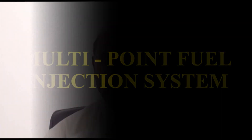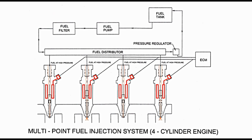In due time, these were replaced by multipoint fuel injection systems. In this system, a fuel injector is provided for each intake port. The fuel pump starts working as soon as the engine is switched on and builds up pressure. The fuel is drawn by the pump and then goes to a filter, where dirt and any solid contaminant present in the fuel is removed. Filtered fuel goes to individual injectors through a fuel distributor. Fuel pressure is maintained with the help of a pressure regulator, and excess fuel is sent back to the fuel tank.